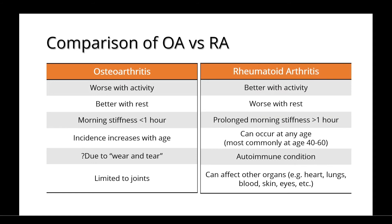Rheumatoid arthritis usually gets better with activity and is worse with rest. It presents with prolonged morning stiffness lasting over one hour, and can occur at any age, but most commonly at age 40 to 60. It's considered to be an autoimmune condition, and can affect other organs besides the joints, such as the heart, lungs, blood, skin, and eyes.